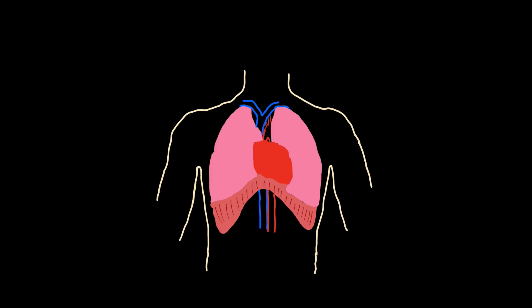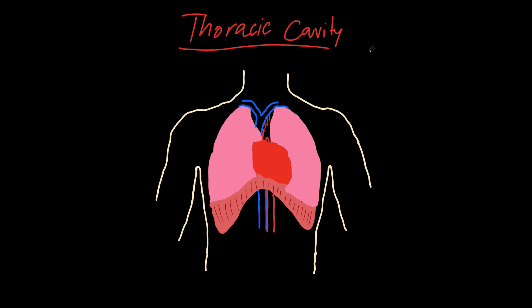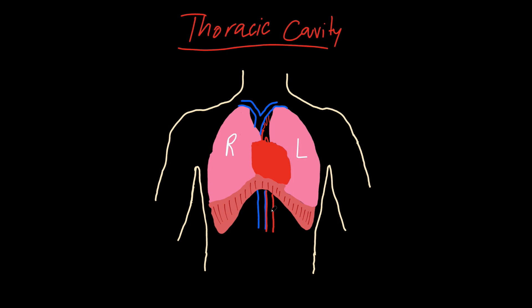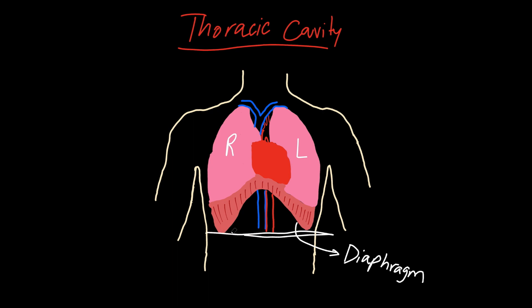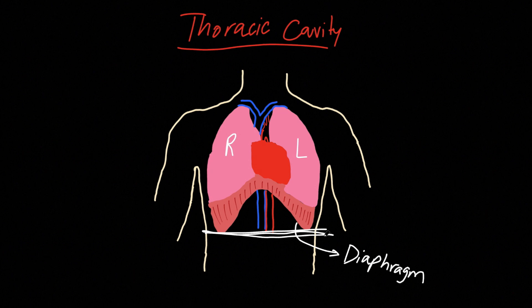Let's start with the anterior view of the heart. Your heart sits in the thoracic cavity and it is enclosed in between the right and left lungs. It's slightly positioned towards the left, and at the bottom we also have the diaphragm, which sits right under your heart and splits the thoracic cavity from the abdominal cavity. The lungs and diaphragm together create this compartment for the heart to be sheltered in.